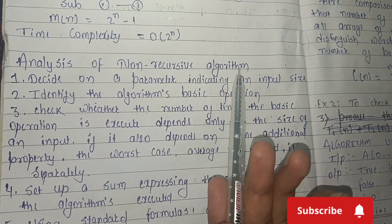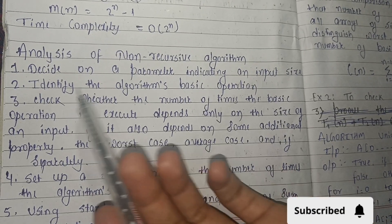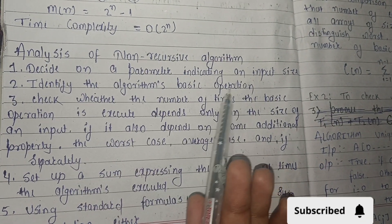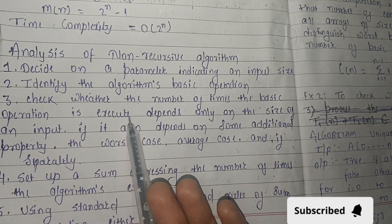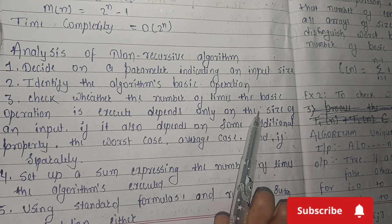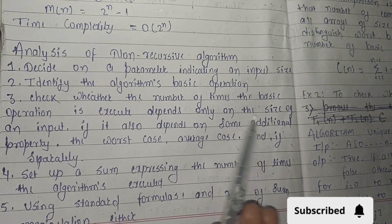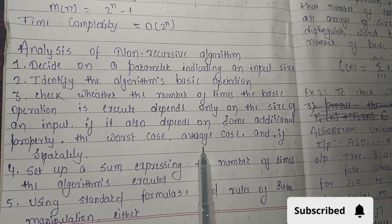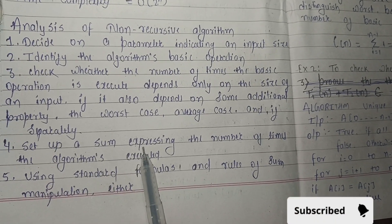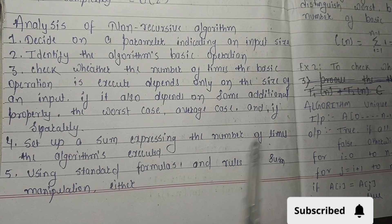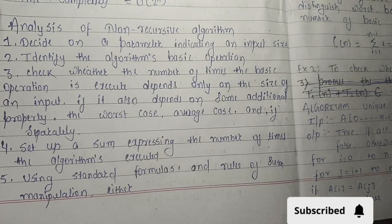Next is non-recursive algorithm. Steps: 1. Decide on a parameter indicating input size. 2. Identify the algorithm's basic operation. 3. Check whether the number of times the basic operation is executed depends only on the size of input. If it also depends on some additional property, analyze worst case, average case, and best case separately. 4. Set up a sum expressing the number of times the algorithm is executed.